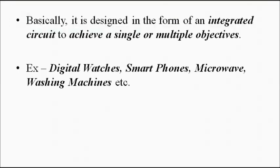The embedded system, when we are talking about it, is basically in the form of an integrated circuit, which consists of thousands and thousands of small circuit elements. It functions on the basis of the programs, the software which is installed in it. Examples of embedded systems can vary from simple examples like digital watches, smartphones, microwaves, washing machines — any appliance nowadays which we call smart devices has an embedded system as an integral part of its functioning.